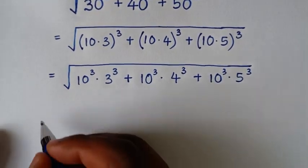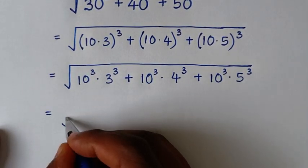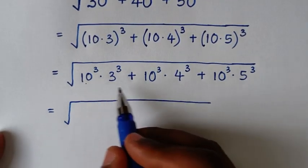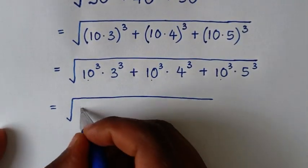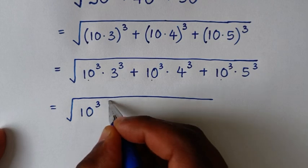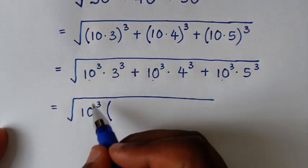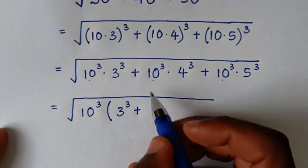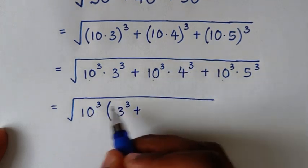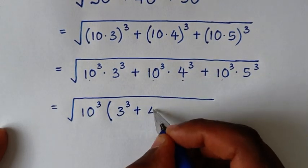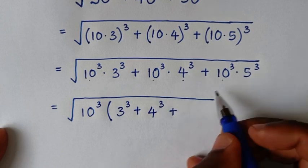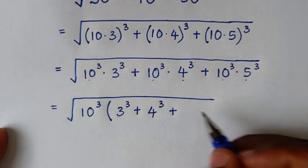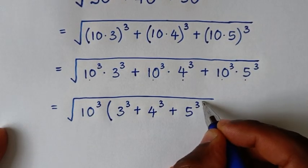Then in the next step, it will be equal to the square root. Since 10³ is common, we factor it out of the bracket, leaving 3³ plus 4³ plus 5³ inside the bracket.